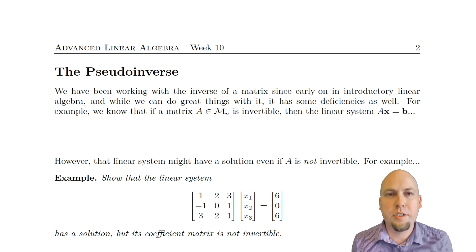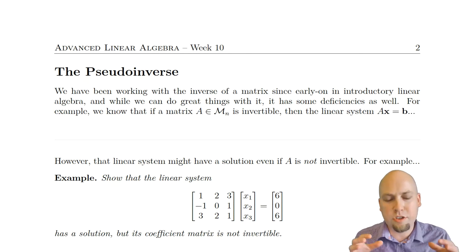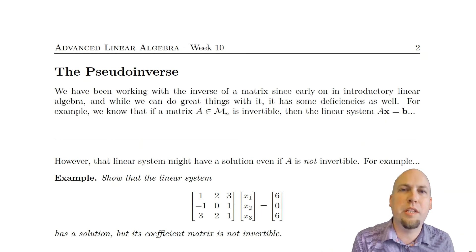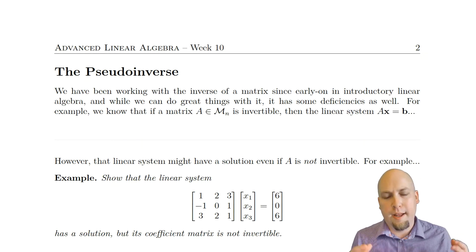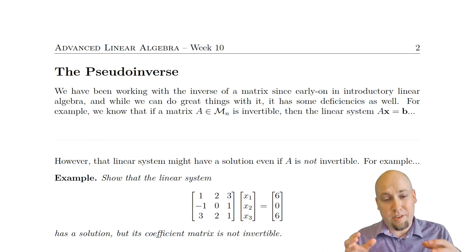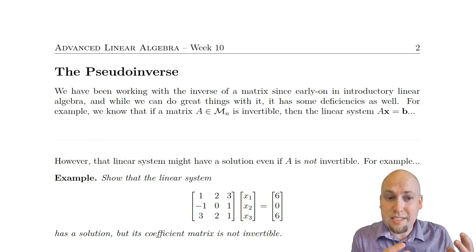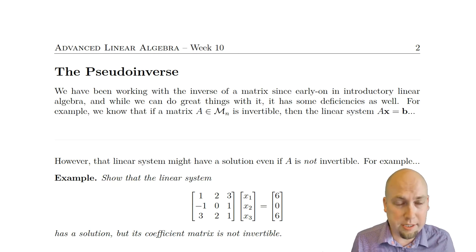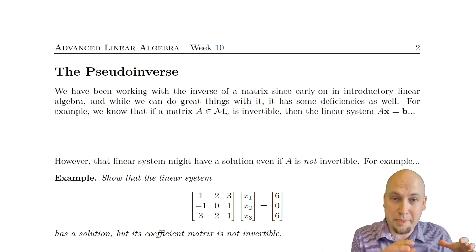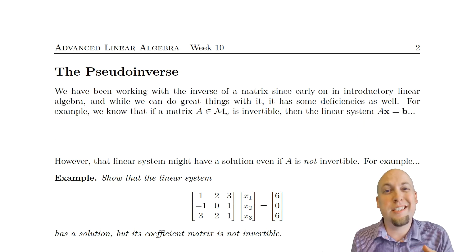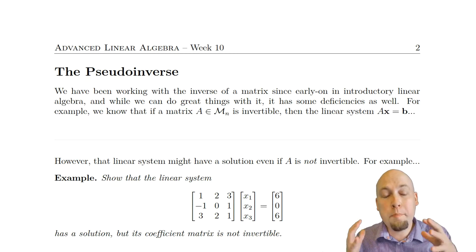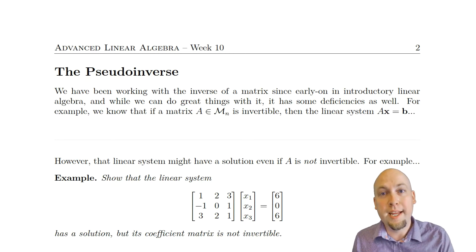The idea behind the pseudo-inverse is very similar to what it was for the inverse of a matrix — we want to construct a matrix that undoes what the original matrix did. We can only actually do this if the matrix is square and satisfies some extra condition like the determinant being non-zero. That's what invertibility of a matrix was. But the pseudo-inverse is a slightly more general concept and it has the advantage that it exists no matter what matrix you start off with — it might not be invertible, it might not even be square.